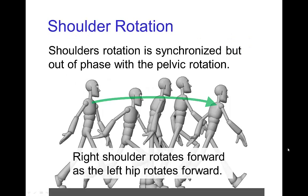One of the overlapping actions that occurs in a walk is the rotation of the shoulders. We saw in another tutorial that pelvic rotation makes walking more energy efficient. And when we have this pelvic rotation, we also have a corresponding shoulder rotation which is out of phase. So the right shoulder rotates forward as the opposite hip is rotating forward.